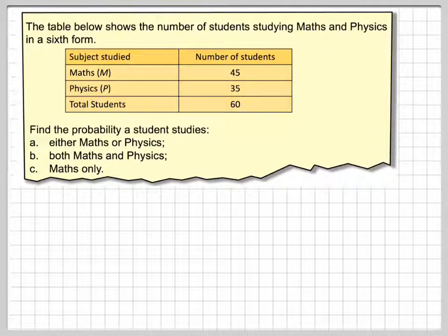Right, in the last video we looked at mutually exclusive events. Let's have a look at this problem. The table below shows the number of students studying maths and physics in the sixth form.